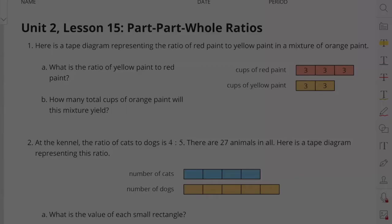Unit 2 Lesson 15 Part-Part-Whole Ratios 1. Here is a tape diagram representing the ratio of red paint to yellow paint in a mixture of orange paint.